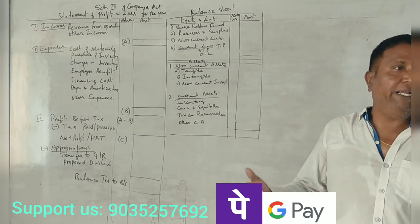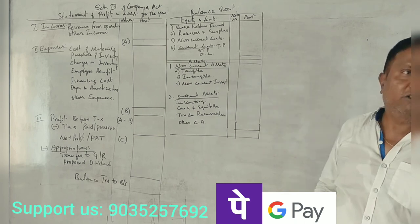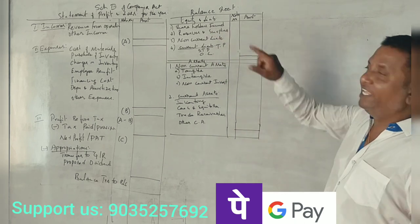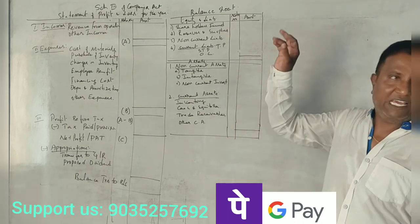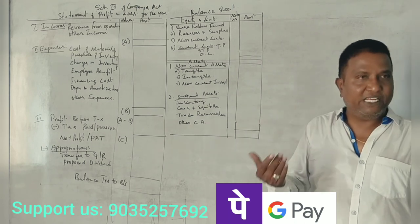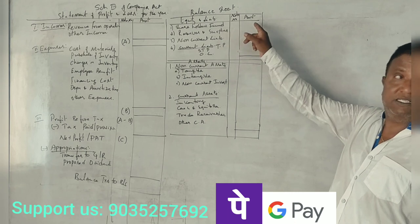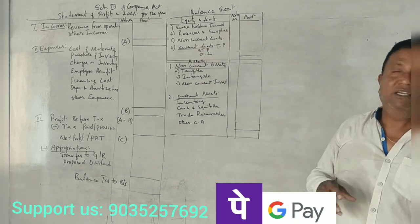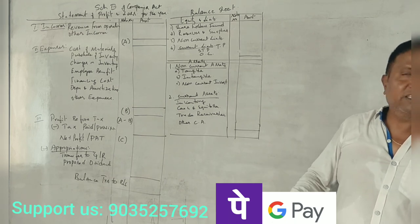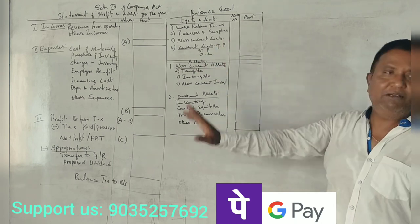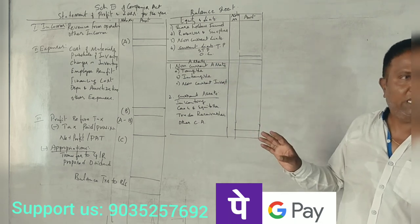The Balance Sheet is also prepared at the end of the year. It has two sides: Equity and Liabilities, and Assets. Under equities: share capital and reserves and surplus. Non-current liabilities include long-term loans like debentures and bank loans. Current liabilities include trade payables, short-term provisions, and other current liabilities.